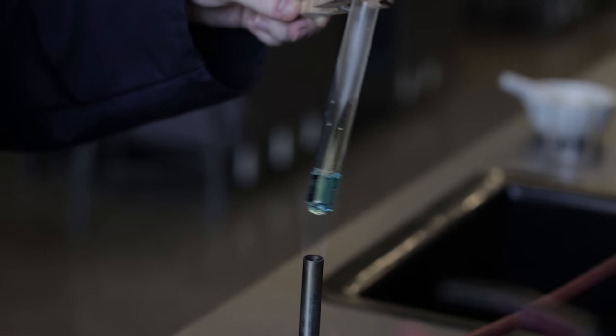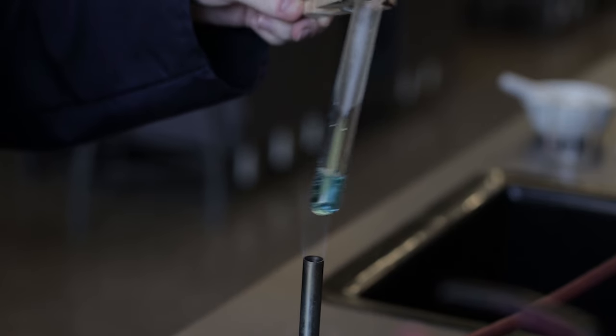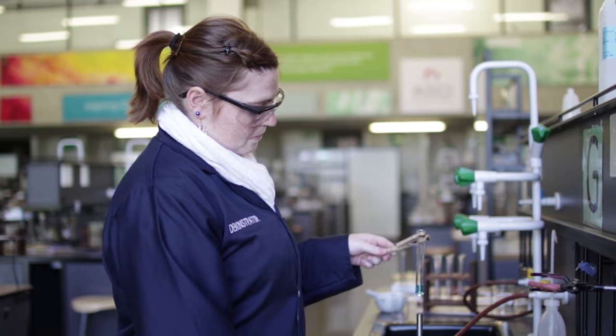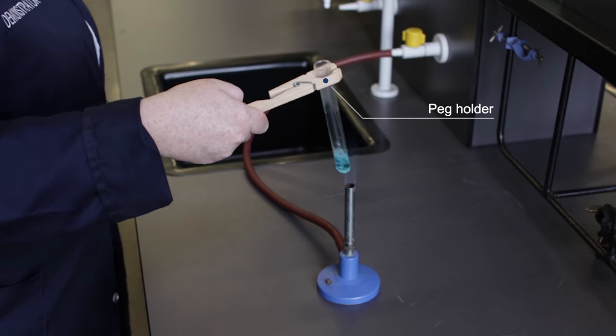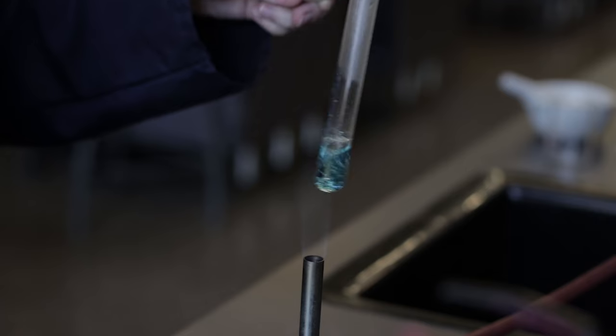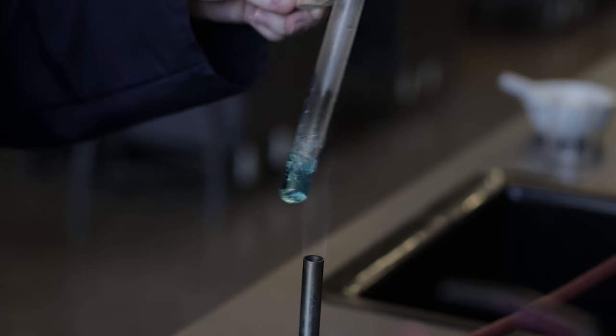A Bunsen burner is regularly used to heat solutions. Solutions in test tubes can be heated by using a wooden test tube peg holder and heating it in the flame. Always make sure that the test tube is not more than half full and ensure that it does not remain stationary in the flame.